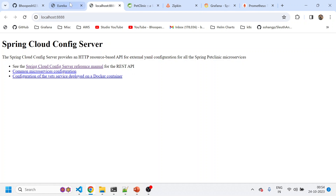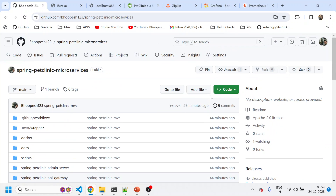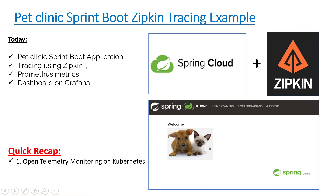I hope you understand what I'm trying to show — this is a basic understanding of how to install a Spring Boot application, enable tracing using Zipkin, send metrics to Prometheus, and have those dashboards visible via Grafana. I'll wrap up the video here. If you haven't liked and subscribed to the channel, please do so because the next videos will have more in-depth coverage on OpenTelemetry and tracing, which is very popular and needs to be implemented across the market. Stay tuned, we'll keep publishing more videos. Don't forget to like and subscribe. See you later, thank you, bye.